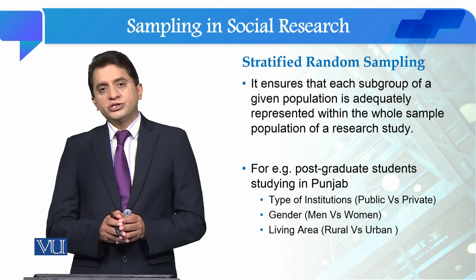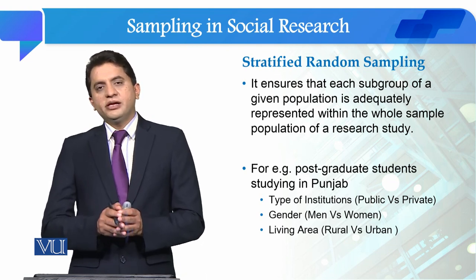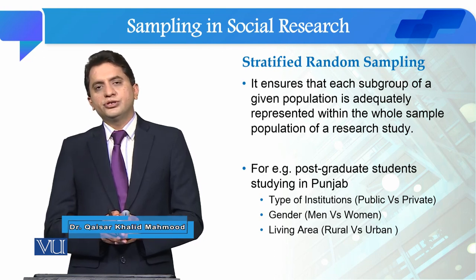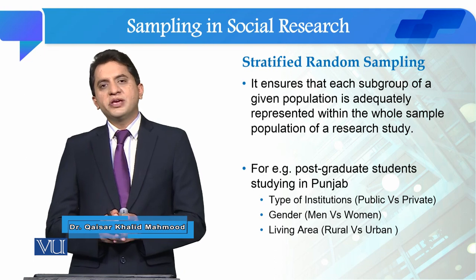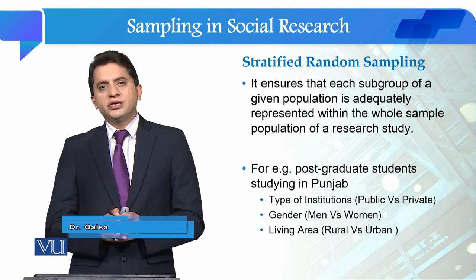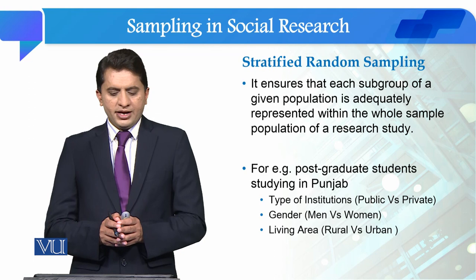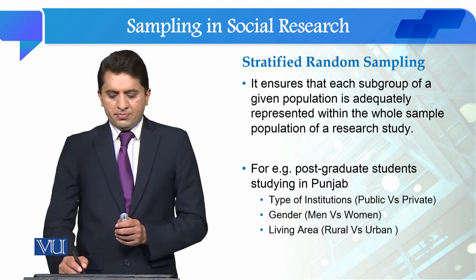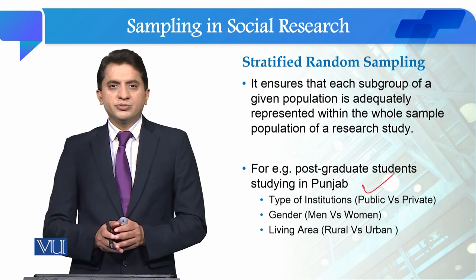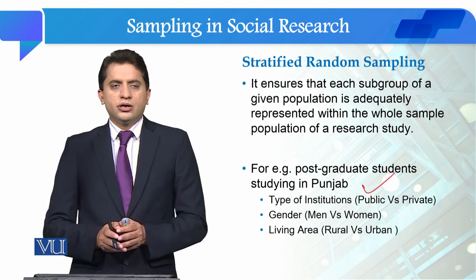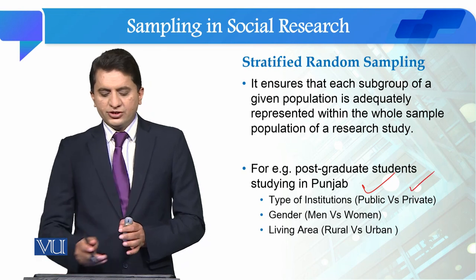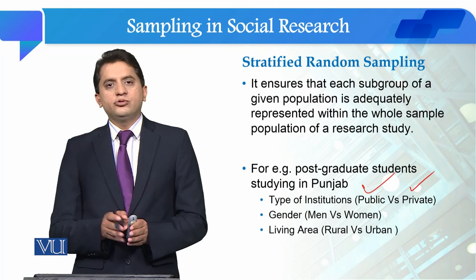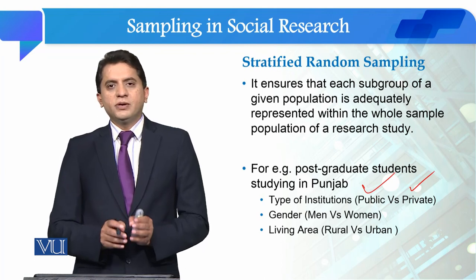Our example study involves post-graduate students enrolled in Punjab. We have three strata. The first stratum is type of institution — who are post-graduate students in public sector institutions and private sector institutions. We ensure that our sample covers both public and private institutions.